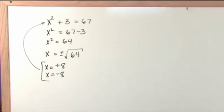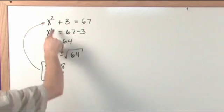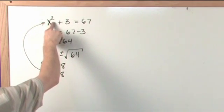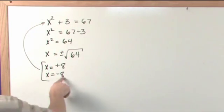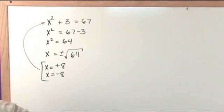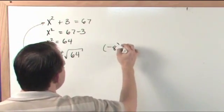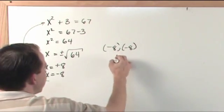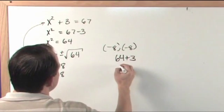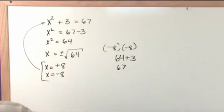Plug it back in and check our work. Positive 8 times positive 8, which is 8 squared, is 64 plus 3 is 67. If we take the negative 8 and put it in here, we have negative 8 times negative 8, which is x squared. Again, that's 64 plus 3, which is 67. So we get the right answer and both of these are valid solutions.